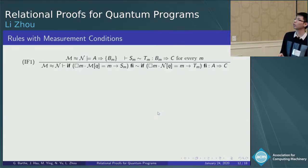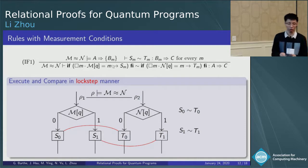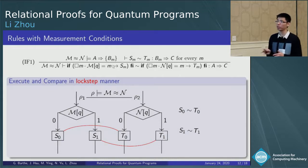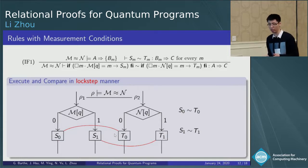With this measurement condition, we are able to establish this if rule. It says that if two inputs rho 1 and rho 2 produce the same control flow, then we can compare these two if statements in a lockstep manner. That is, we only need to compare the corresponding branches S0, T0, and S1, T1, while all the cross-comparison such as S0, T1, and S1, T0 can be omitted.